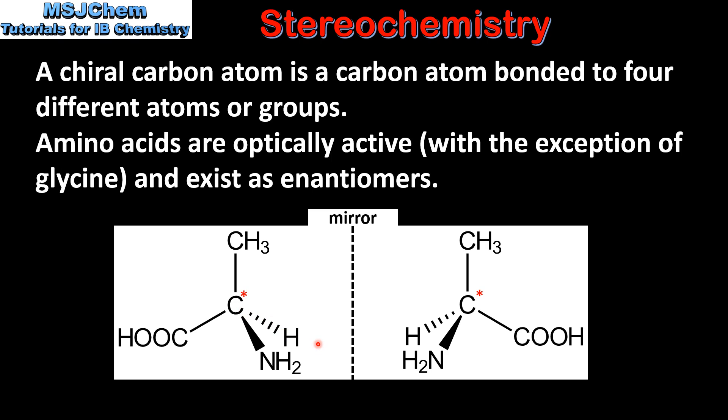The two enantiomers are mirror images of each other and they rotate the plane of plane polarized light in equal amounts but in opposite directions.